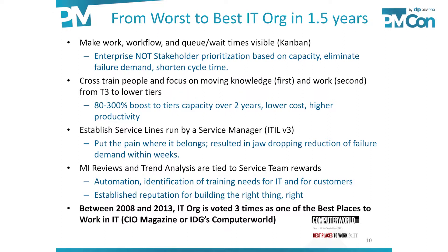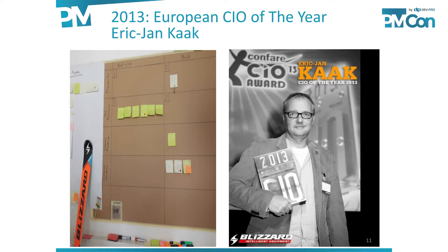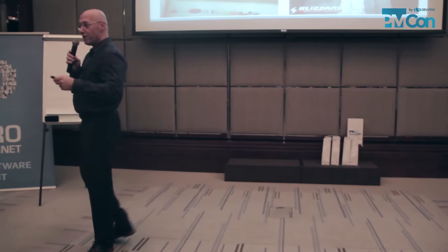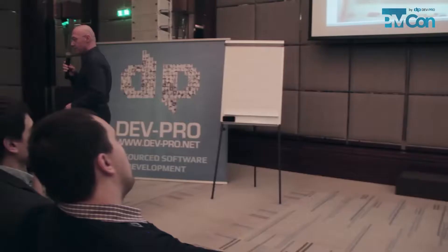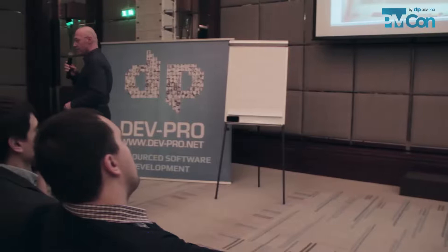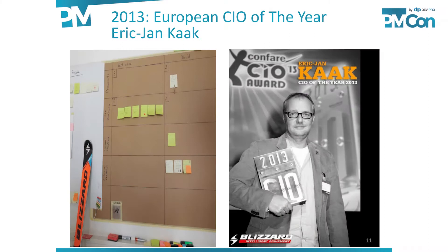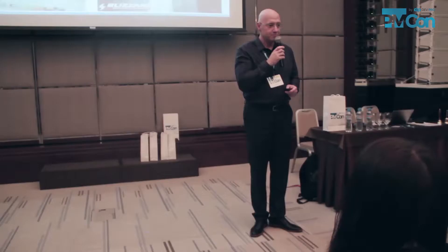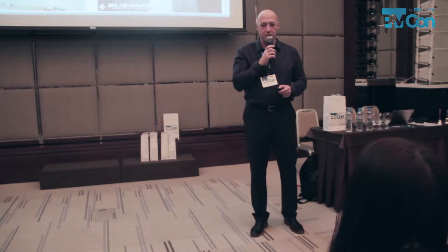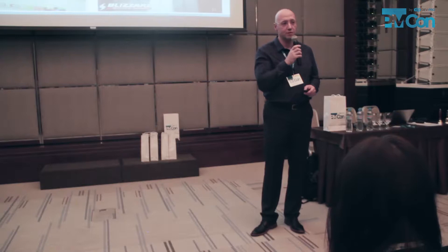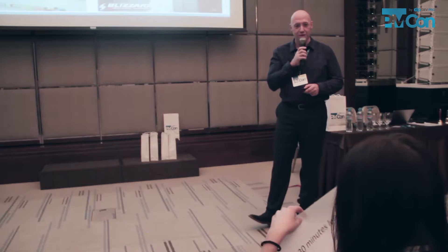Everything that the team worked on was an escalation — something in production was not working and someone was screaming. It took about a year and a half to completely turn this around. This is one of your European neighbors who won a CIO award in 2013. That's his Kanban board — he started it on wrapping paper, then graduated to a cork board, but they did a lot more than just putting things on the wall.